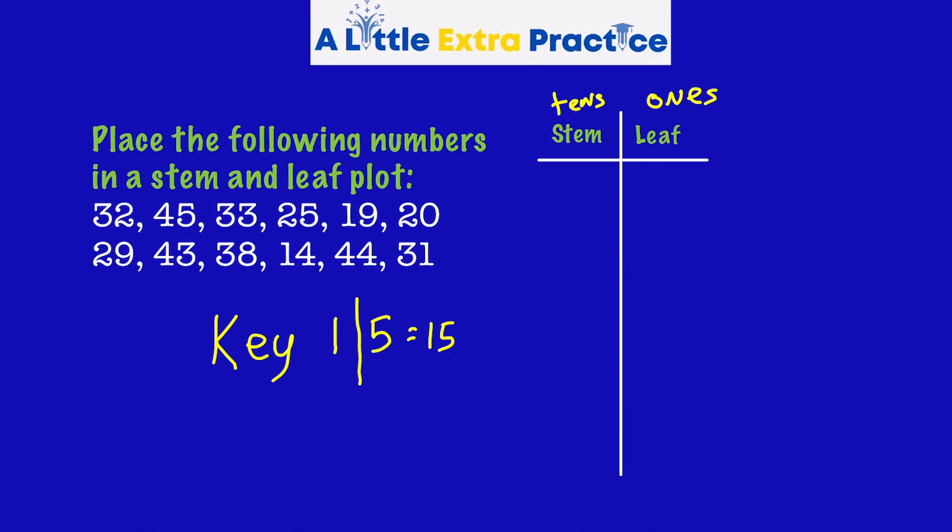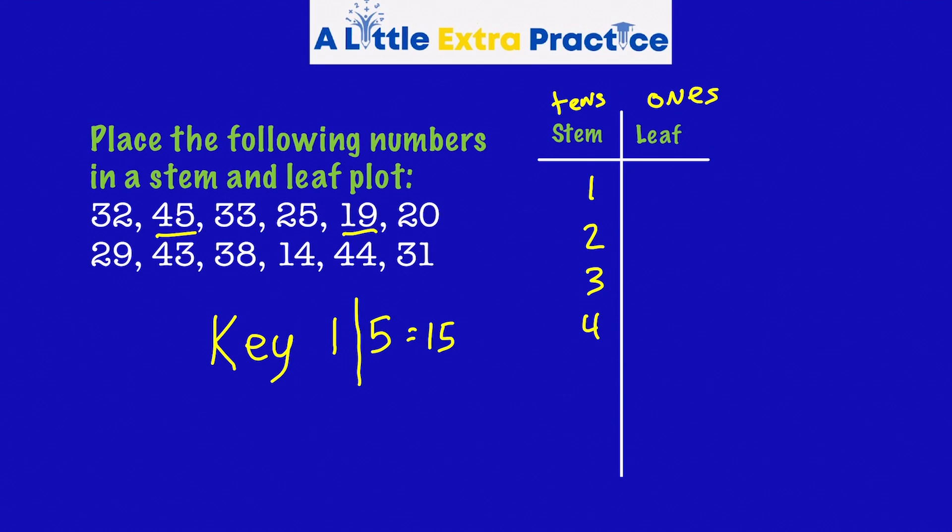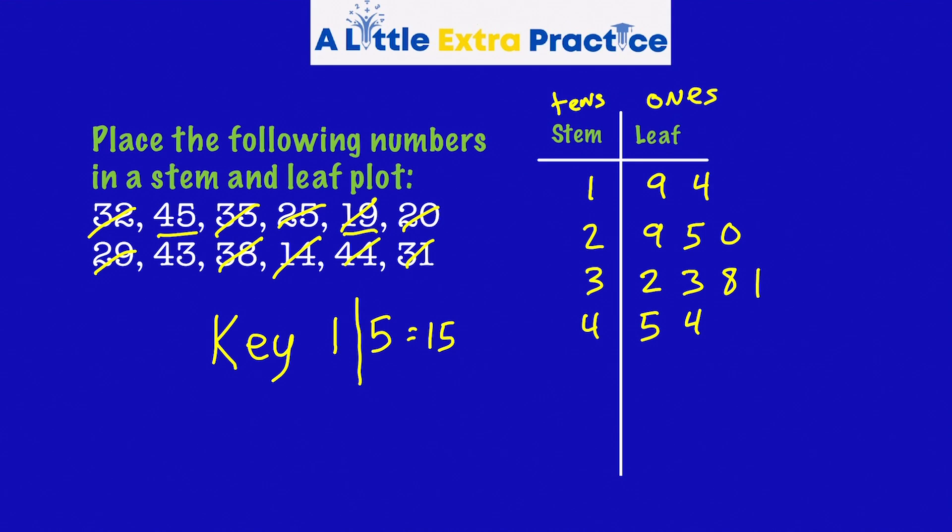Looking at this, the range, it looks like the number in the 10s all the way up to the 40s. So I'm just going to do 1, 2, 3, 4, which is really 10, 20, 30, 40. And let's see, 19. Cross that off. There's a 14. What's in the 20s? 29, 25, 20, and that's it. 30s. 32, 33, 38, 31. Number in the 40s, 45, 44, and 43. How'd you do?